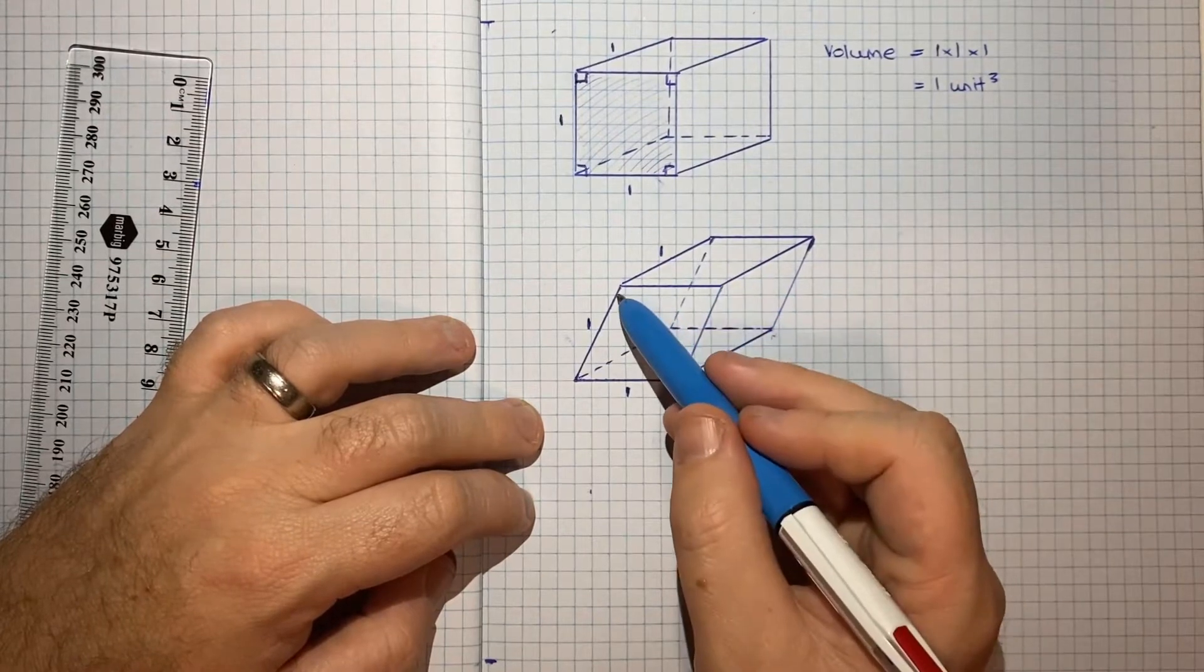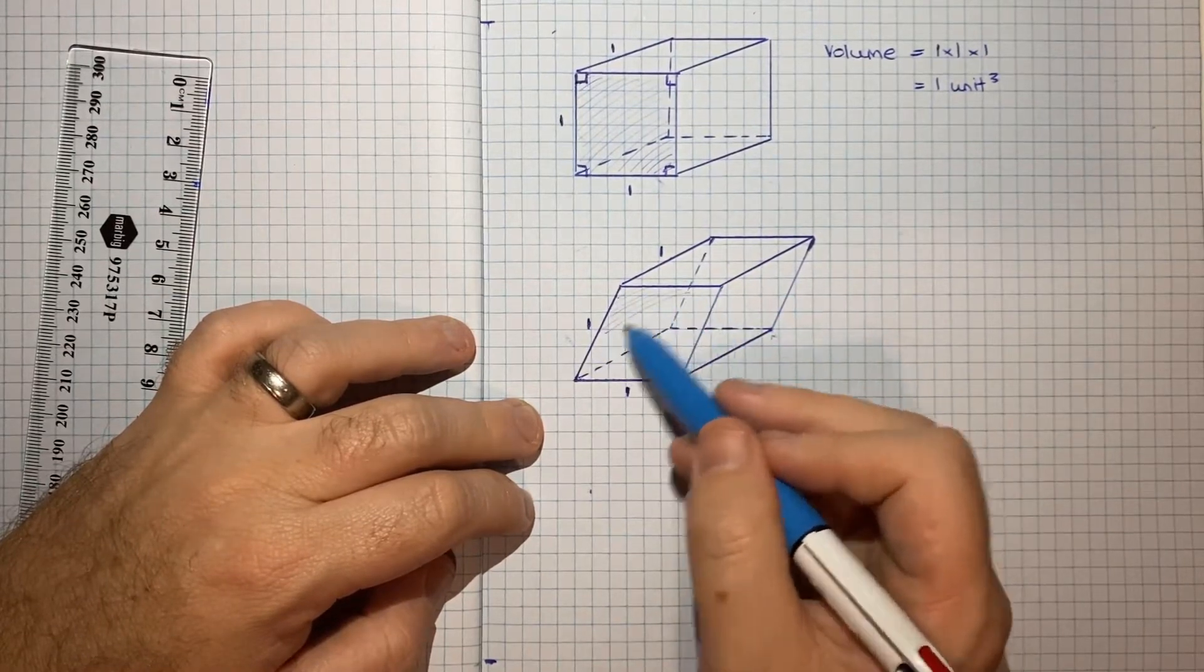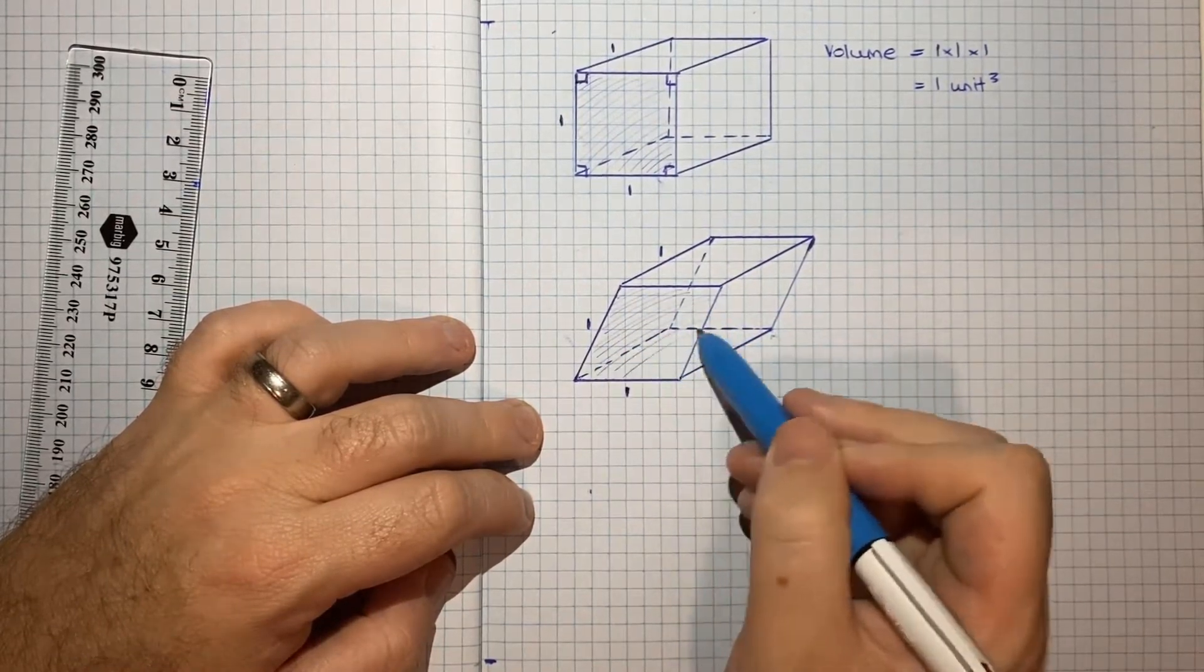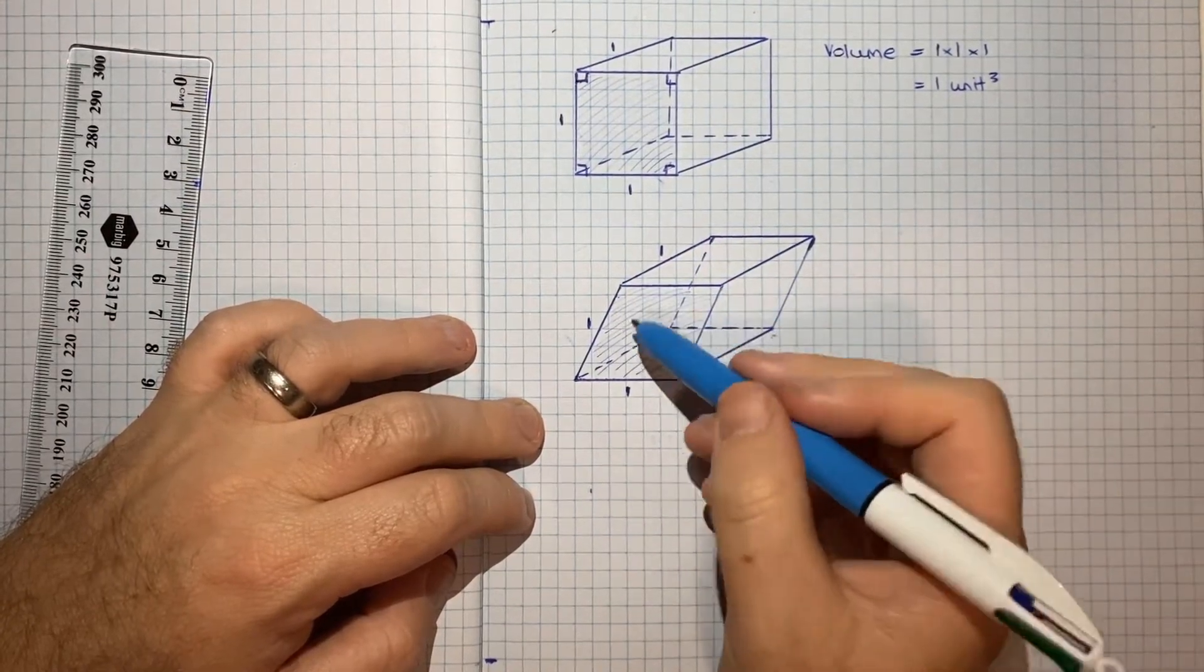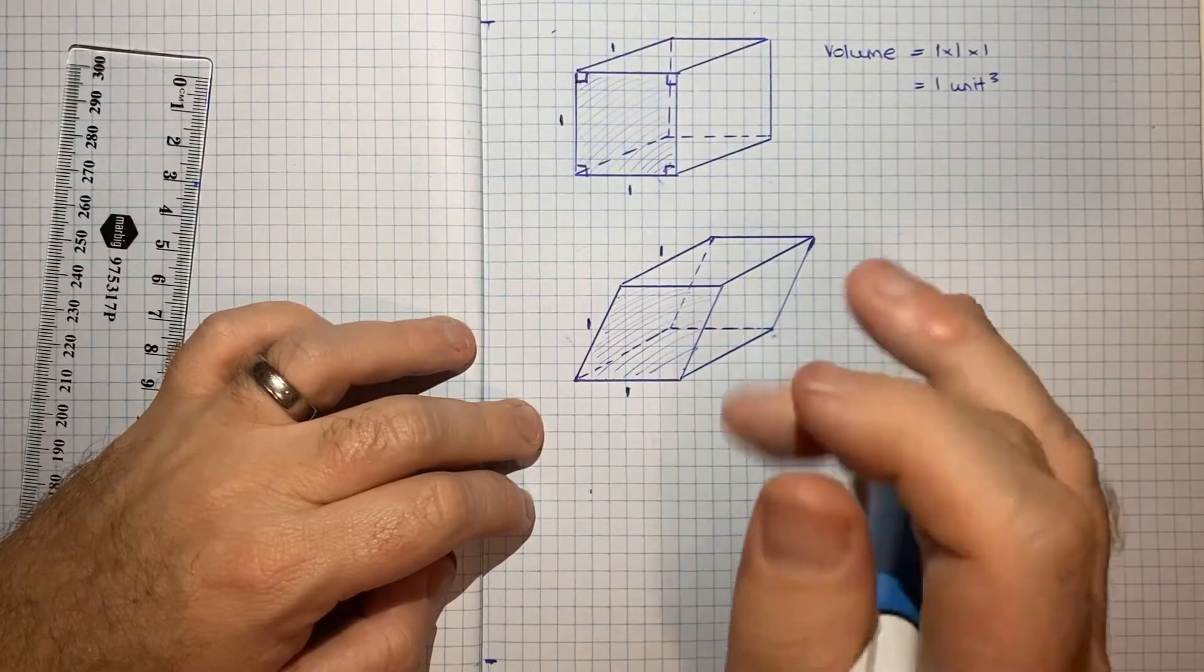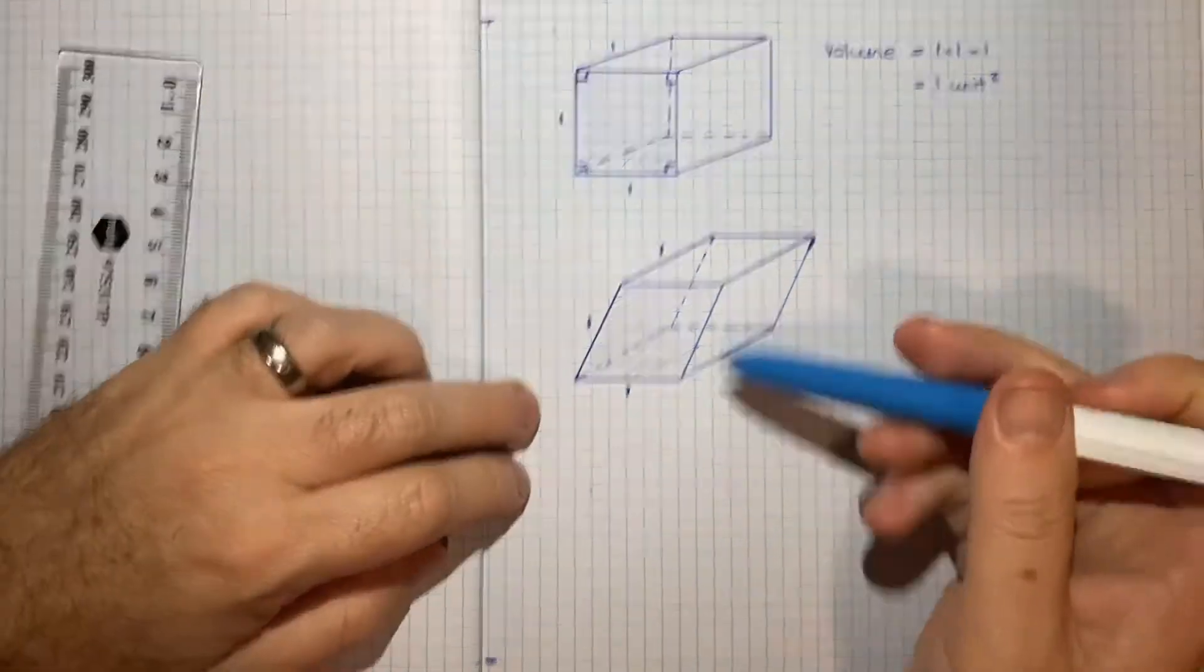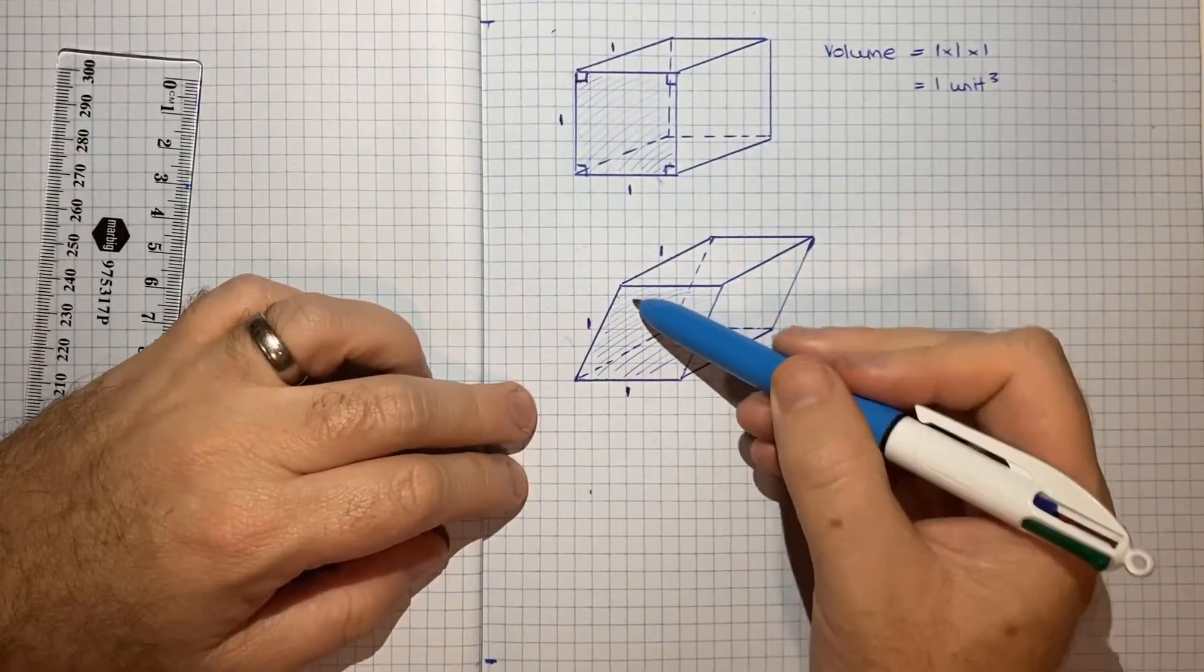So again, the volume will just be, we can take the area of a face and then multiply it by the height. The height's still going to be 1. But the question is, what is the area of this face? And here, the area will be, it can be calculated using the diagonals.